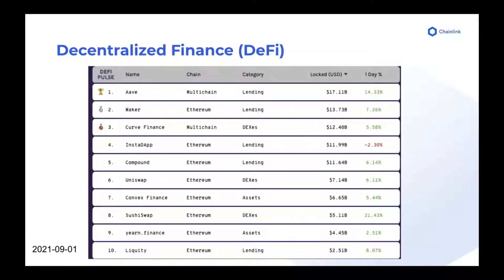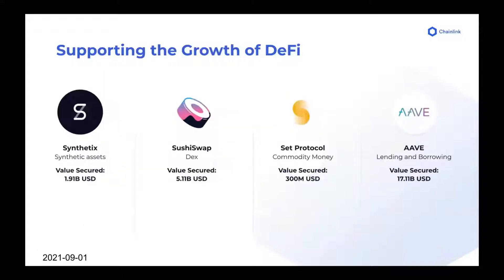DeFi is one of the major areas growing — it still has a ton of momentum and knowledgeable people working in the field. Chainlink supports some of the top projects. At the moment, there are billions of dollars in assets in decentralized finance, which is awesome, but also means we have to be responsible and use the most secure technology that we can. Some projects using these decentralized price feeds include Synthetix, SushiSwap, SetProtocol, and Aave. They range from various different use cases — DEXs to lending and borrowing — and these numbers are just going up day after day.